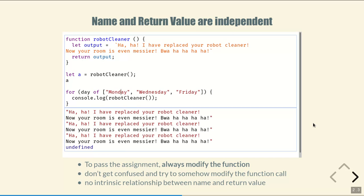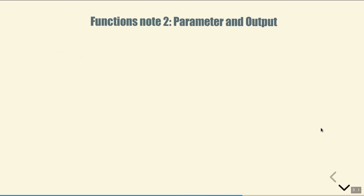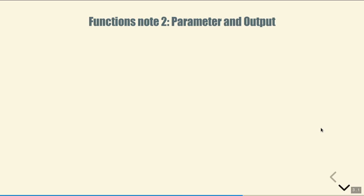So again, no intrinsic relationship between name and return value. Don't try to modify the function call to modify the return value — if you want to pass the assignment, you have to modify the inside of the function so that it always returns the right value. That was conceptual issue number one. Conceptual issue number two: the relationship between parameter and output or return value.